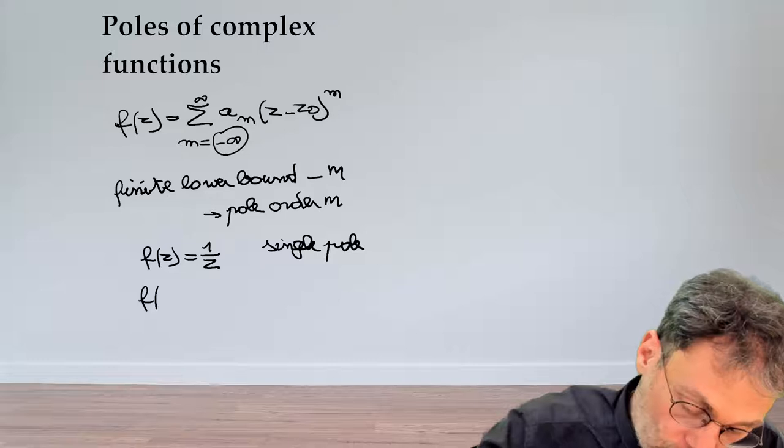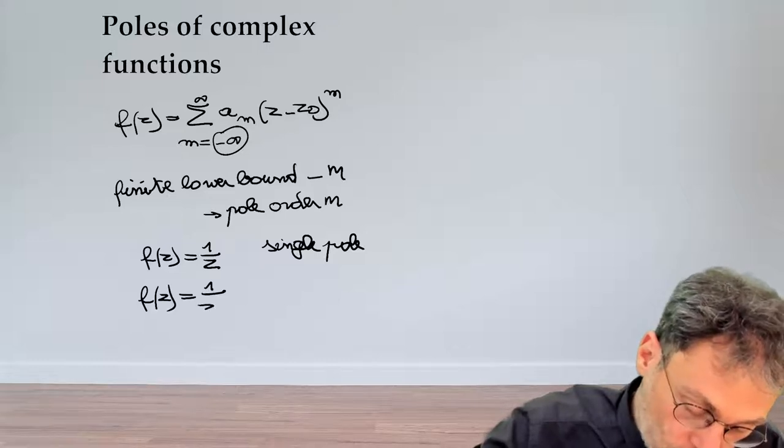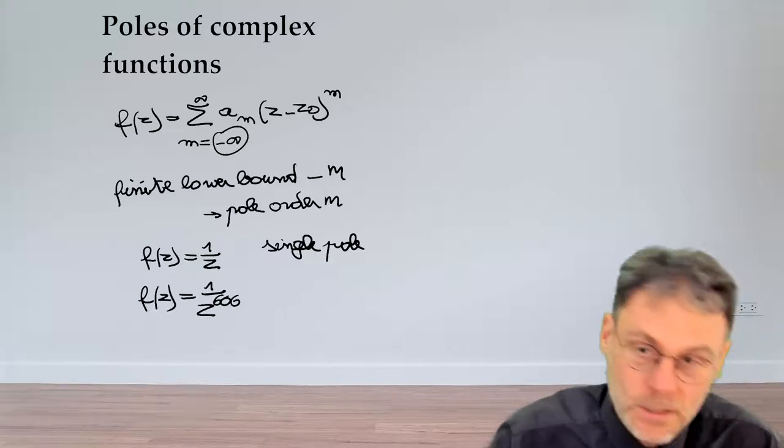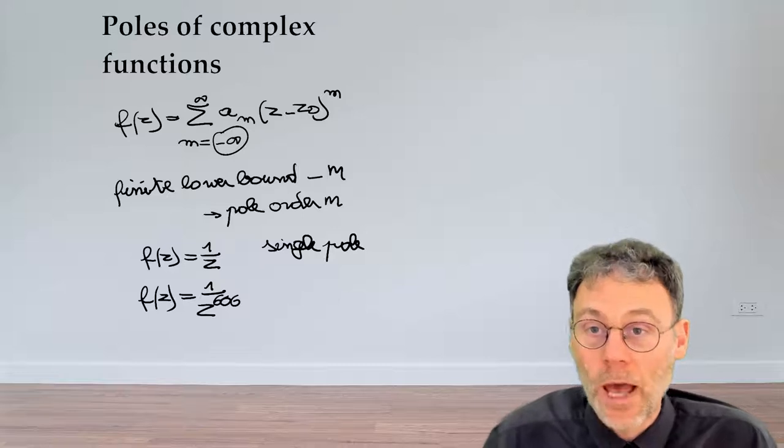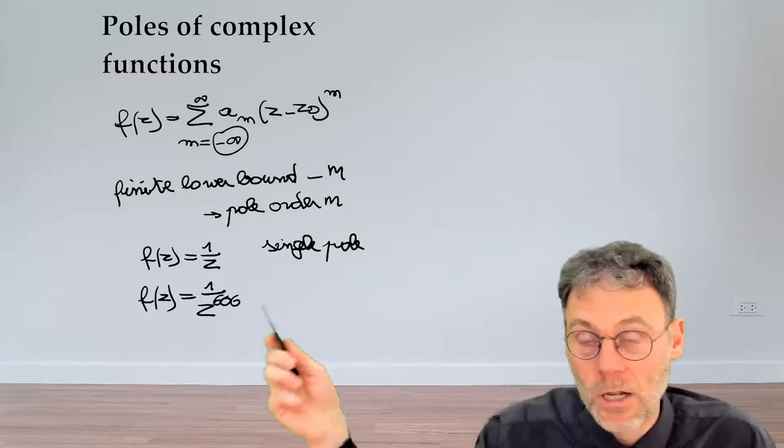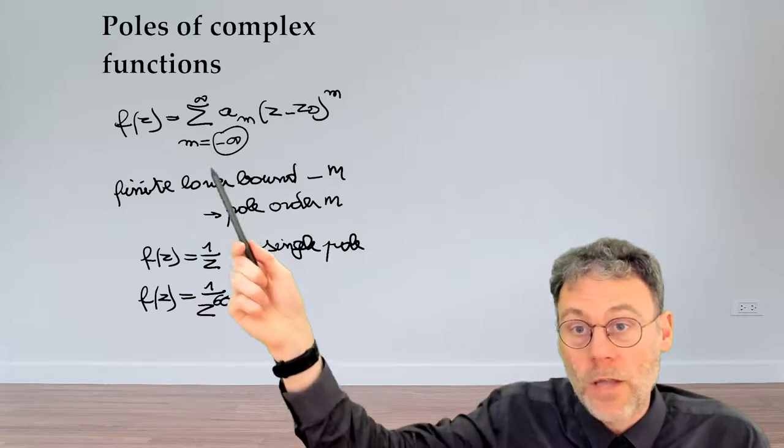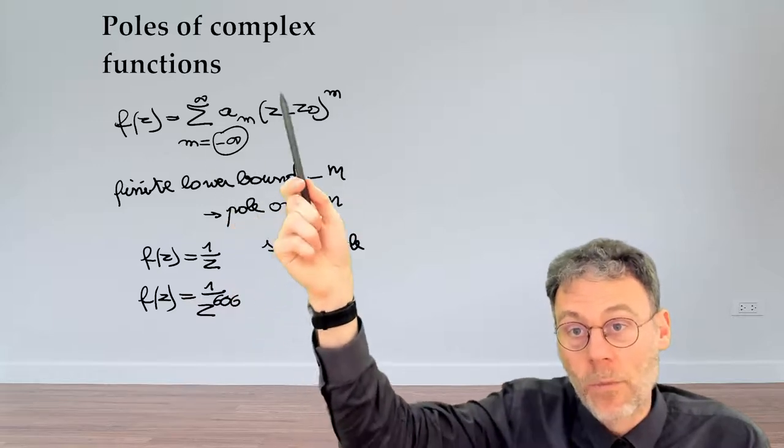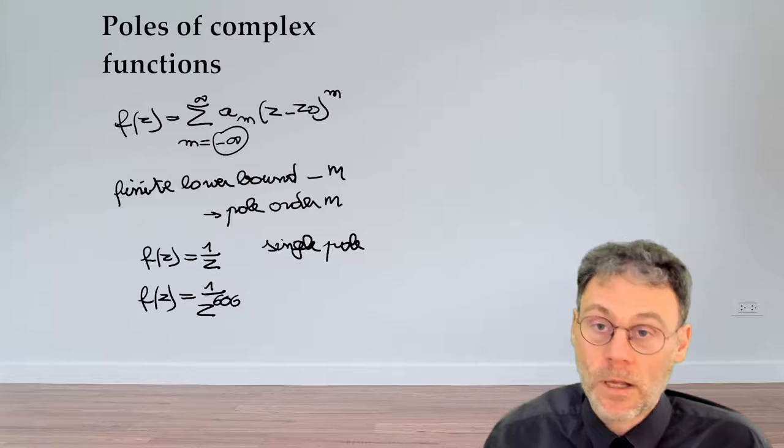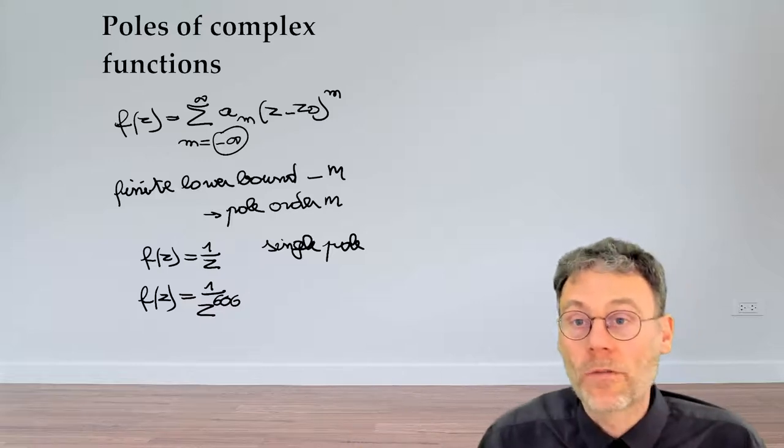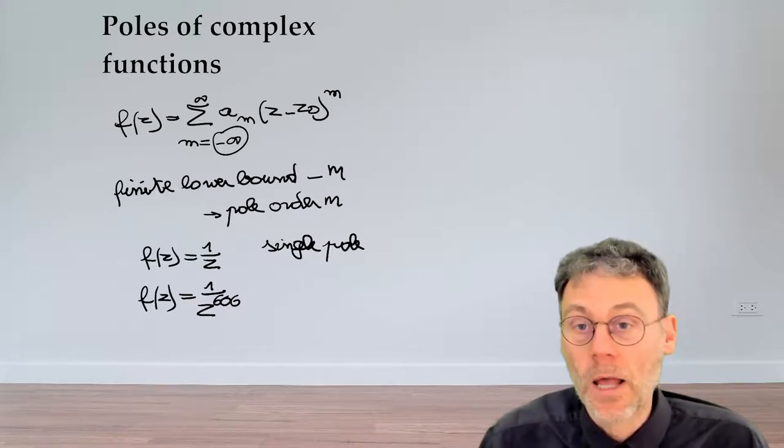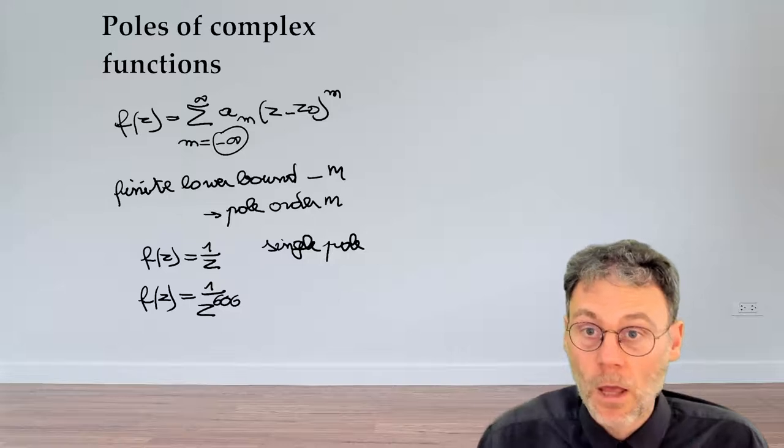If we have a function f(z) which is 1 over z to the power of 666, let's say, then we have a pole of a devilishly large order. Obviously, if you don't have any negative powers of z minus z0, then you're in the clear, and then you don't have any singularity, any pole at that point z0.